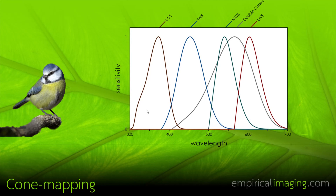Another major addition is the ability to create cone-catch models using colour charts only. Previously we had to know the spectral sensitivities of the camera in order to be able to map across to animal vision. But where we don't have the spectral sensitivities of the camera, it is now possible simply to use the colour chart, as long as the reflectance of the patches in the colour chart have been measured incredibly accurately. This technique is also slightly more difficult to use with ultraviolet-sensitive systems, and it is still probably best to map the spectral sensitivities of your camera for ultraviolet.